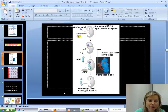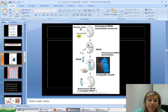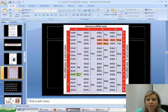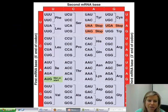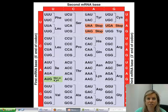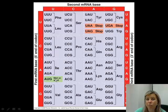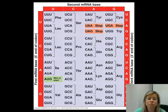Another thing we need to talk about are the different types of codons. If you remember, I showed you this chart, and there are a couple of important ones. First of all, AUG is going to be the start codon — the one that translation is going to start with every time. So AUG is start.